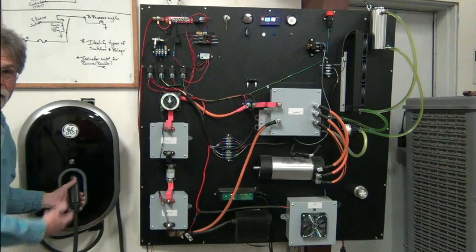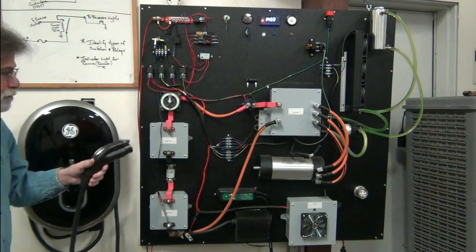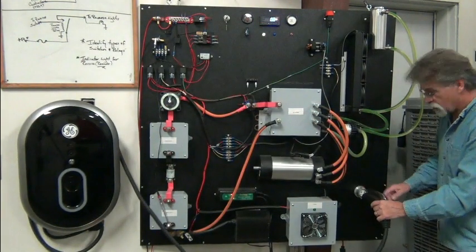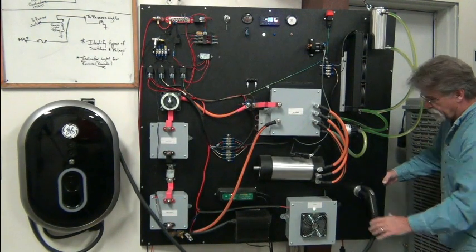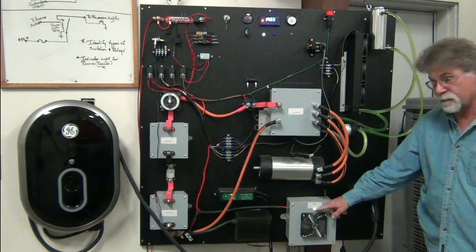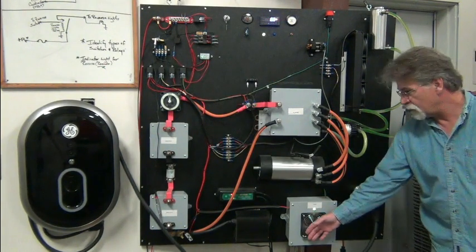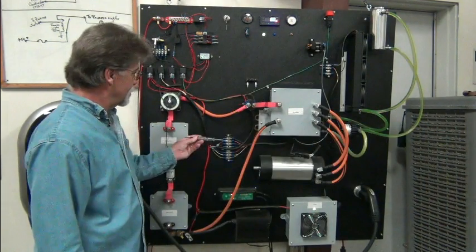Now here's my EVSE. I'm going to plug this into the charge port right here. It's a J1772 charge port. As soon as I plug that in, my charger comes on. Hopefully you can see the little green light there.